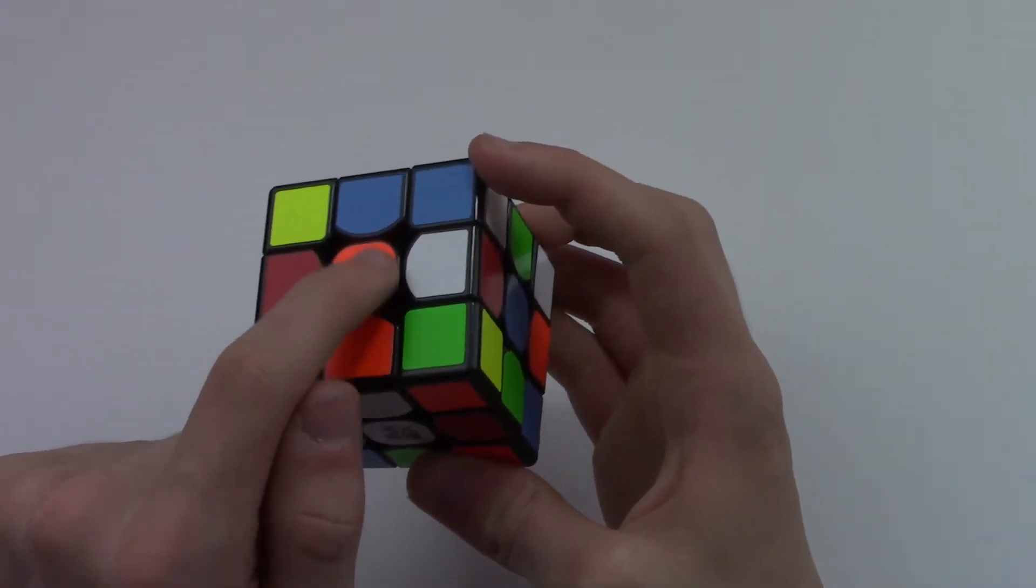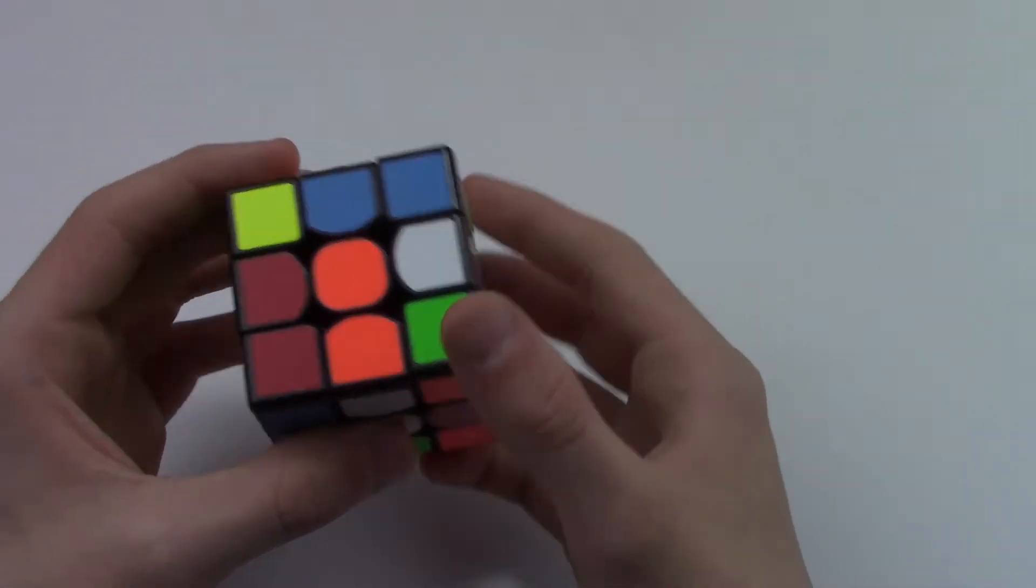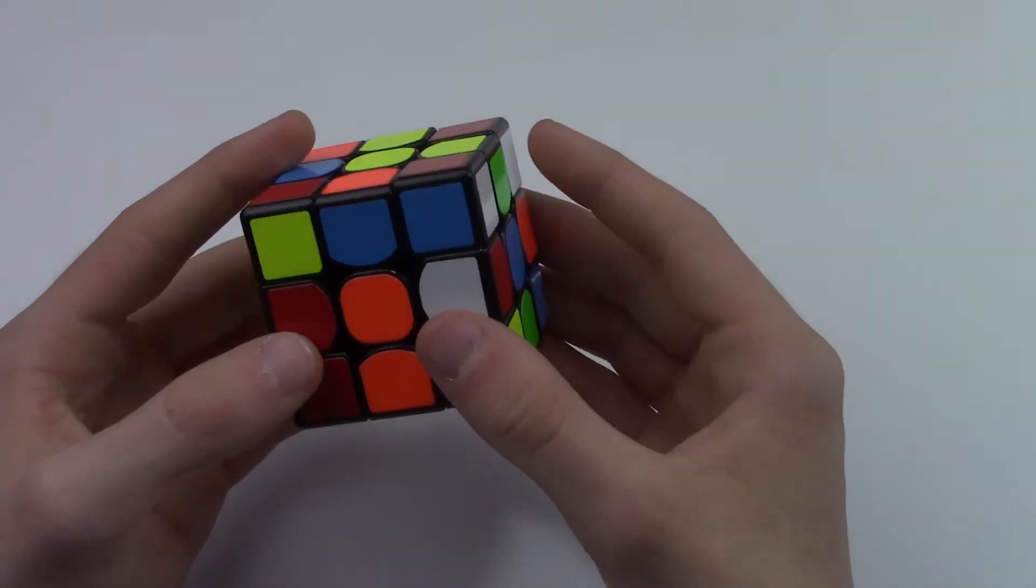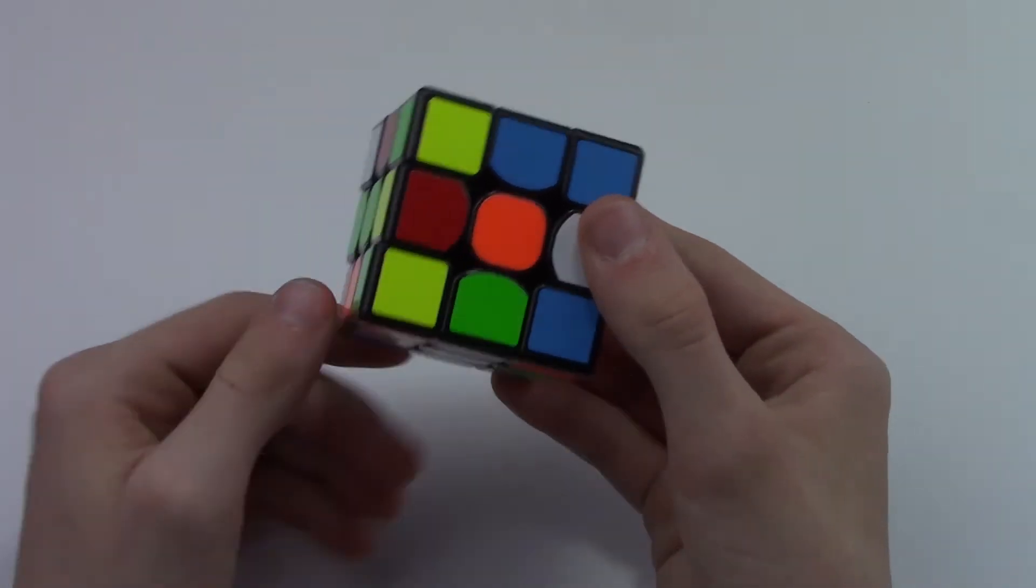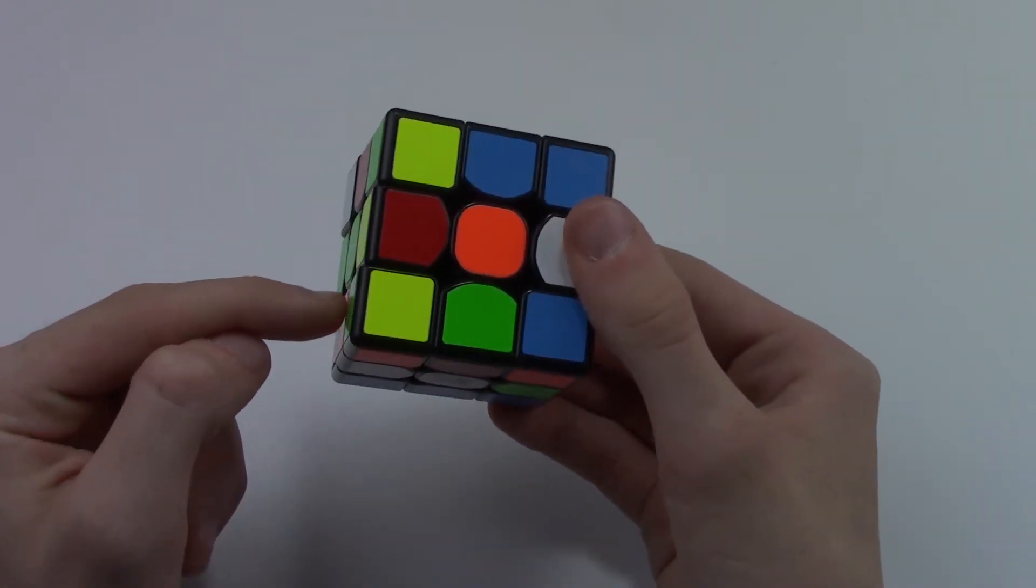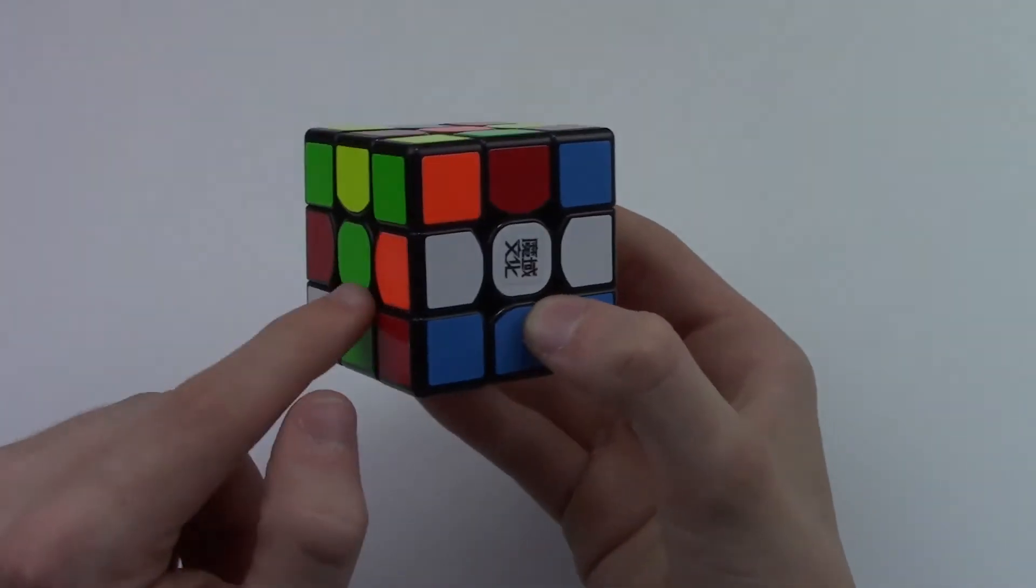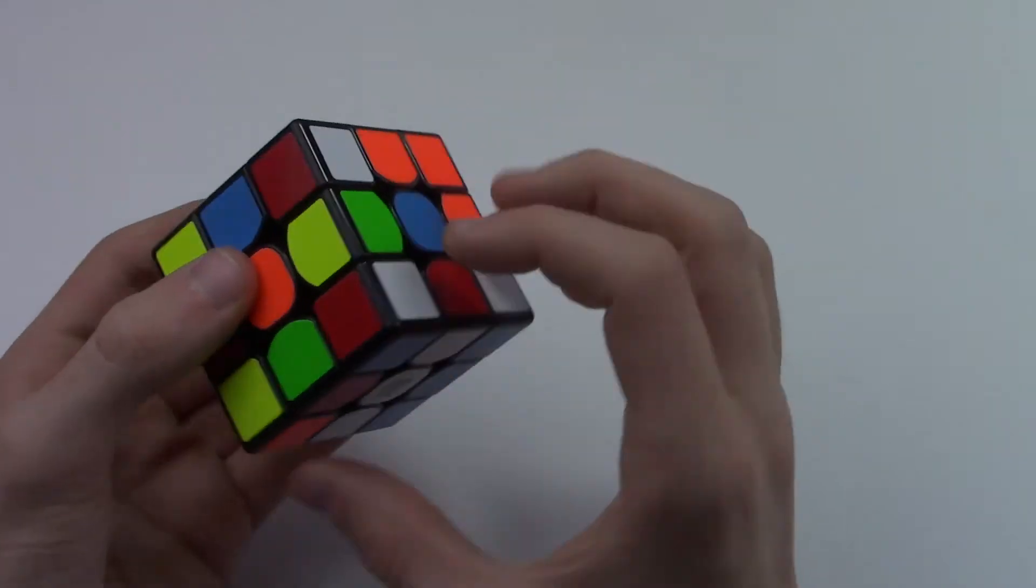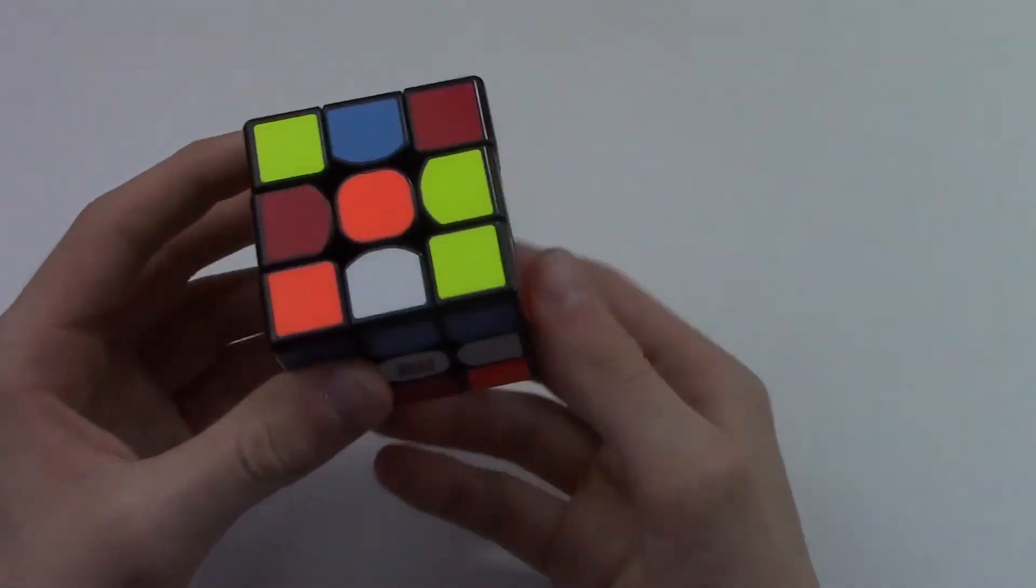So you guys can see this one's lined up, but if I bring the red down, it's lined up with the blue. So what I can do, I know my color scheme, the orange is opposite red. So I can do a D' to bring the red opposite, I mean the orange opposite, and the red over here. So that way I have opposites. So if I tried to line them up, I'd have orange and white, and then red and white. So that's what I want.